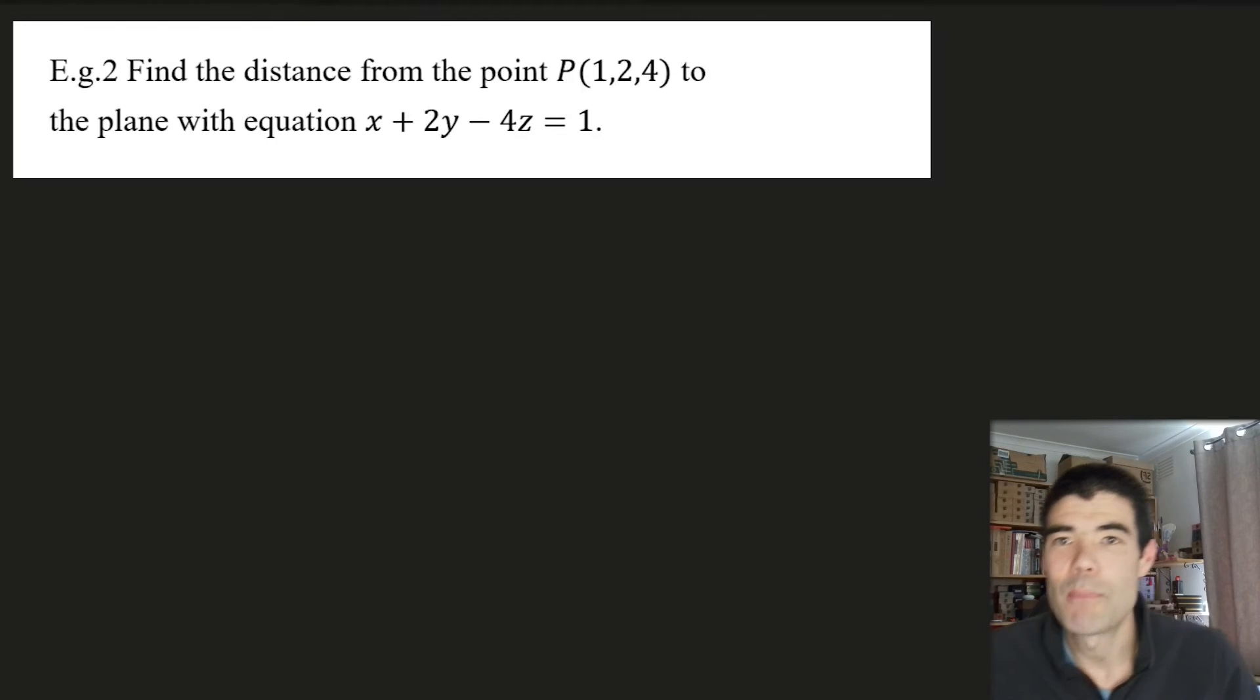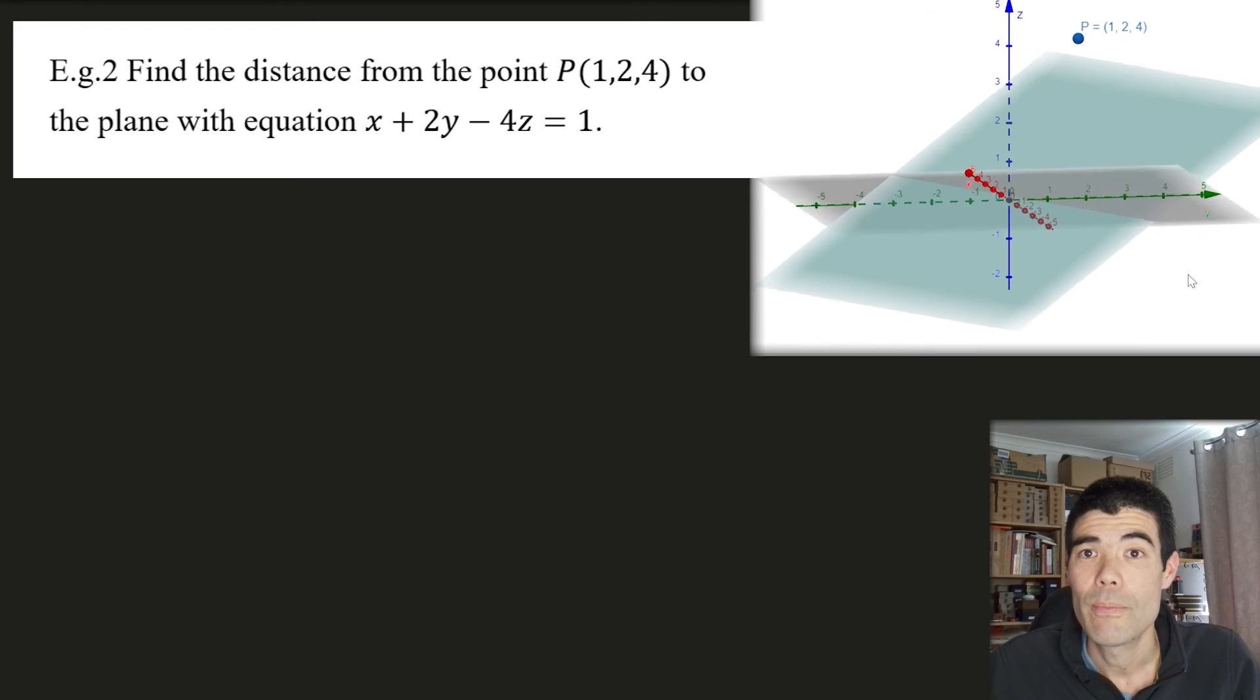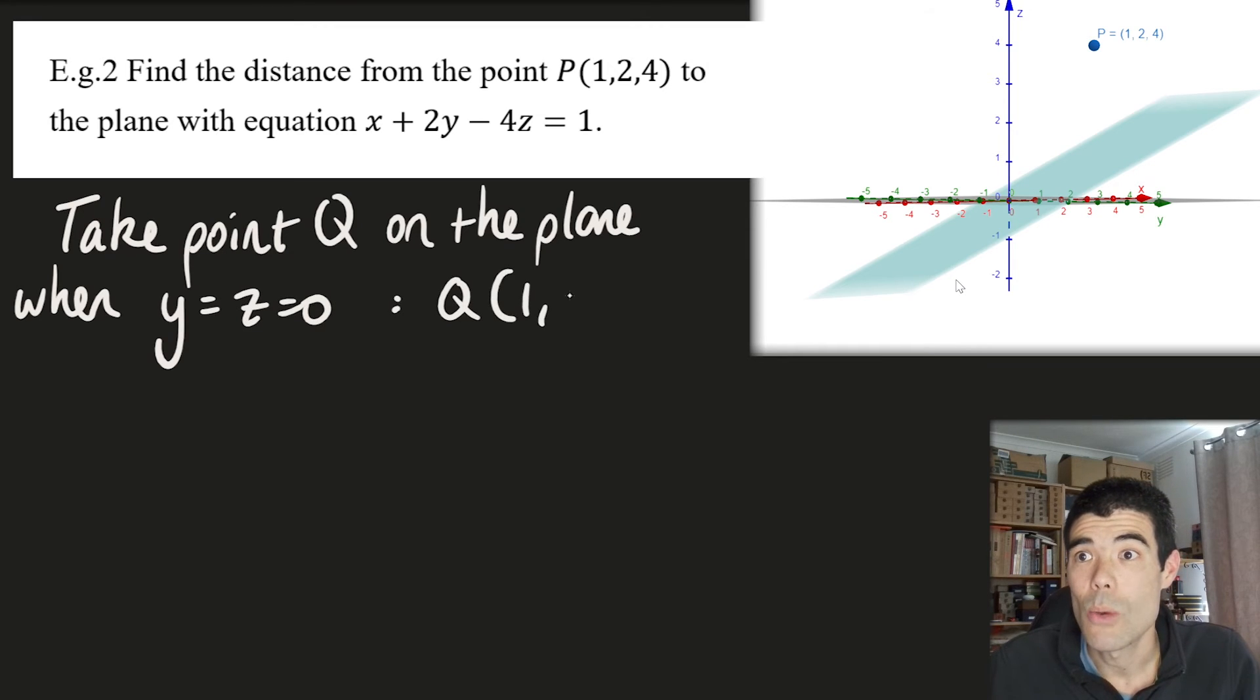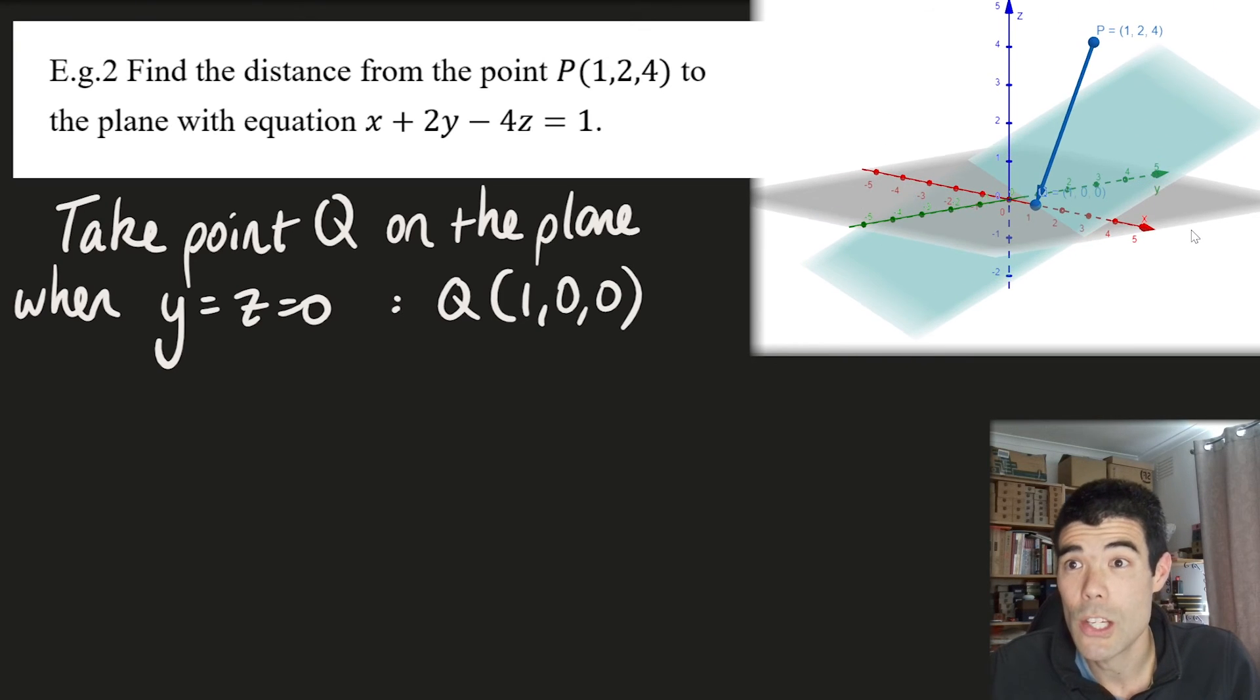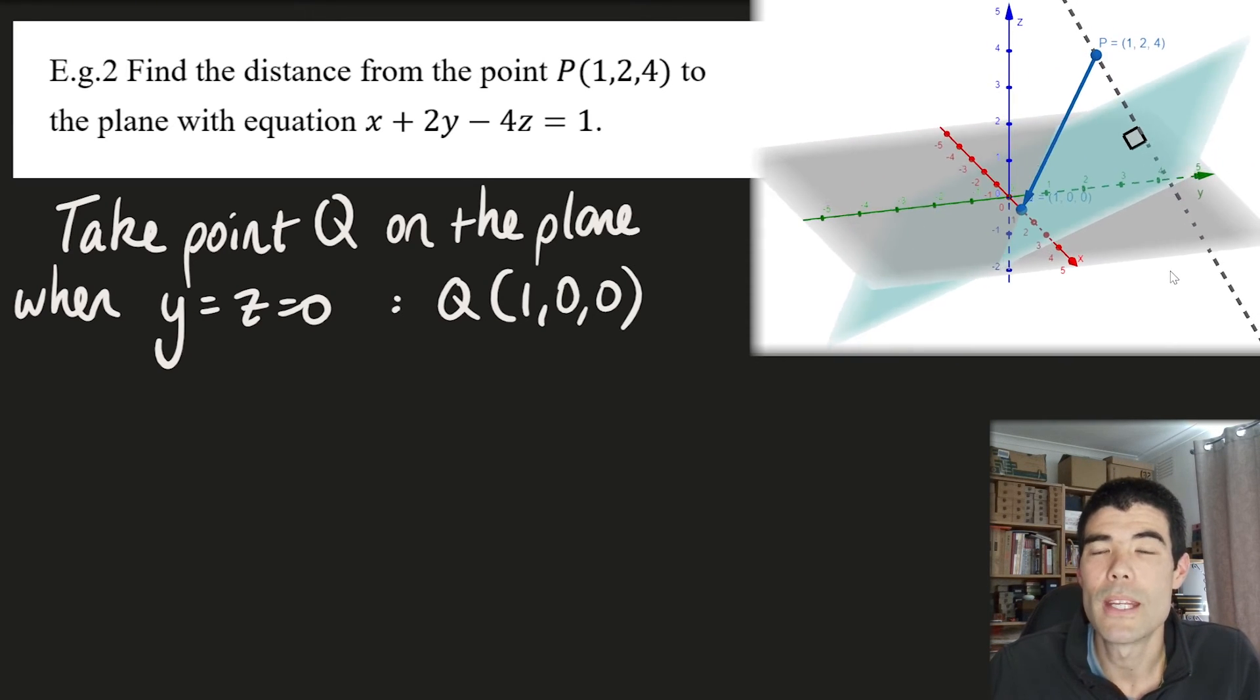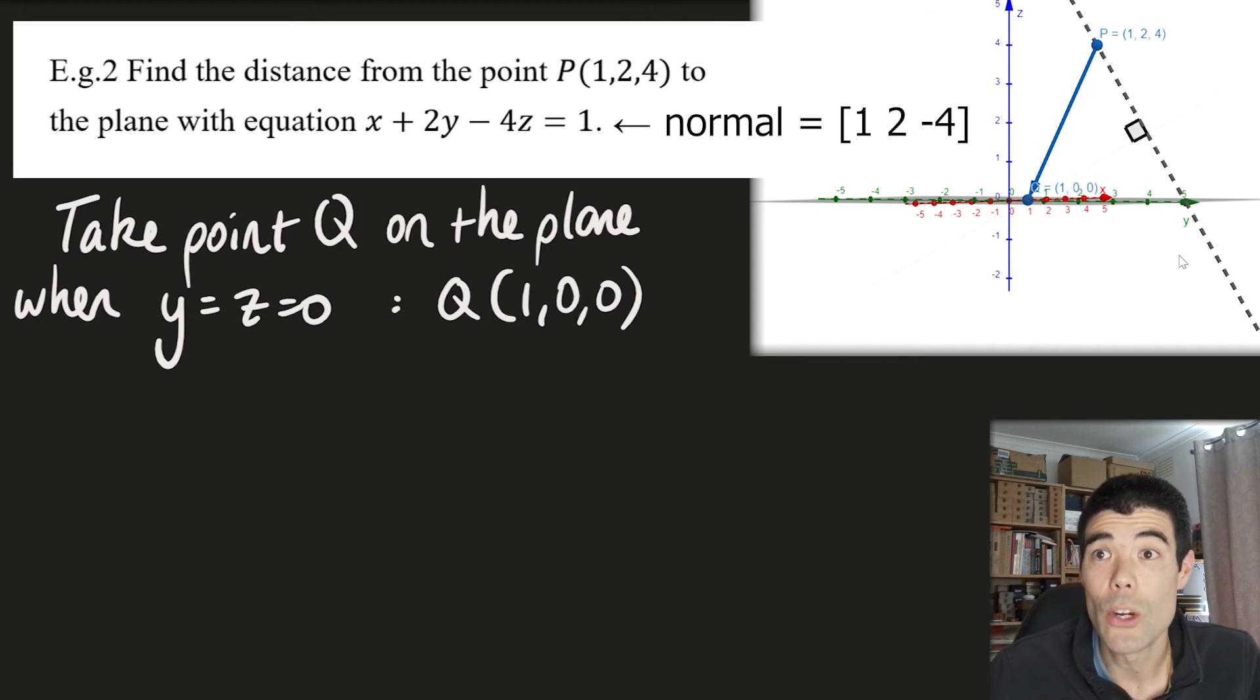For the next example, I think this is a really nice application of vector projection: finding the distance of a point to a plane. So if we have a point, say, one, two, four, we want to find the distance to this plane. The nice thing is we can take any point at all on the plane. To find an easy point on the plane, let's just sub in y equals zero, z equals zero. We'll find x has to be one. So one, zero, zero can be our point on the plane. We'll call that Q and then find vector PQ. And what we want to do with that is find the vector projection of PQ that is perpendicular to the plane. Now, we already know a vector perpendicular to the plane and that's the normal vector. The normal vector is really easy to get from the Cartesian form of the plane equation, just the coefficients of x, y, and z. So we can pull out our normal vector here.